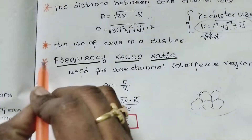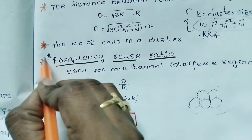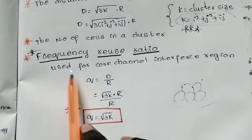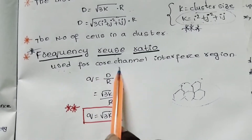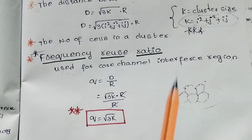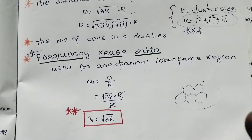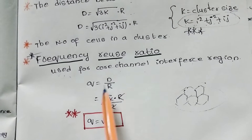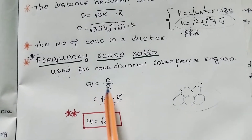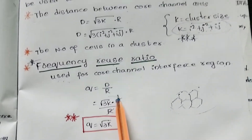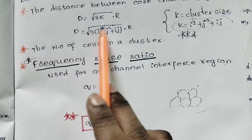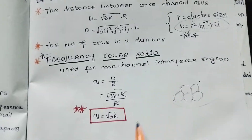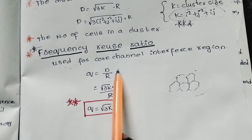Frequency reuse ratio is most important. The formula is used for co-channel interference region. The co-channel interference region: q equals D divided by r. We already have D equals root 3k into r, so substituting gives q equals root 3k.